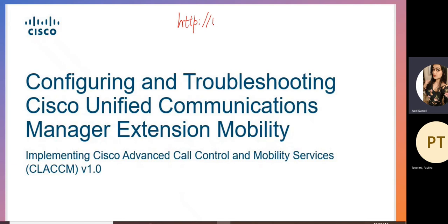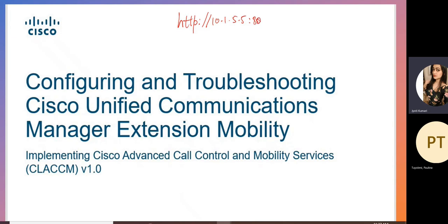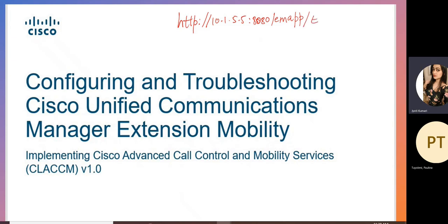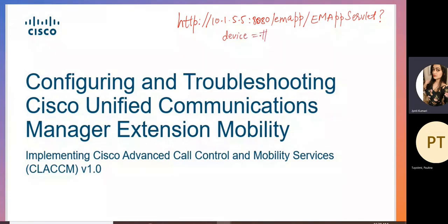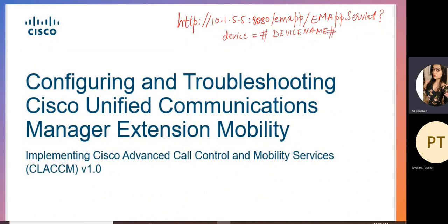This is important to know. The URL uses the IP address of CUCM — your call manager — followed by colon 8080 slash ccmcip slash authenticate.do question mark device equal to hash DEVICENAME hash. This is the URL which is used to enable the phone service.